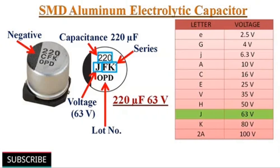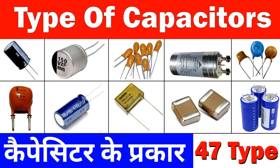During charging, a voltage is applied to the capacitor, causing a potential difference between the plates. This potential difference results in the accumulation of electric charge on the plates. The energy is stored in the electric field between the plates. When the capacitor is discharged, the stored energy is released back into the circuit. Energy storage in capacitors is advantageous for certain applications due to their ability to release energy quickly and efficiently. However, compared to batteries, capacitors typically have lower energy densities, meaning they store less energy per unit volume or weight.